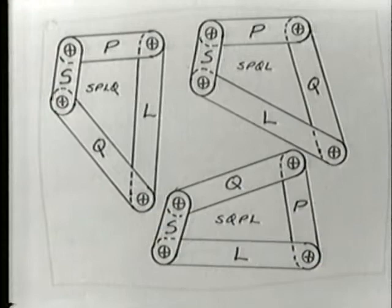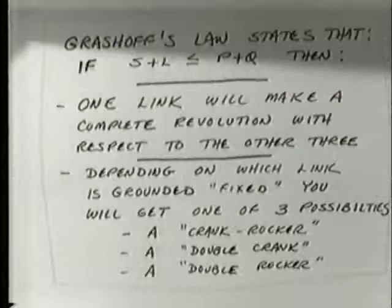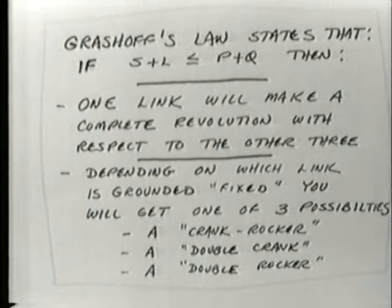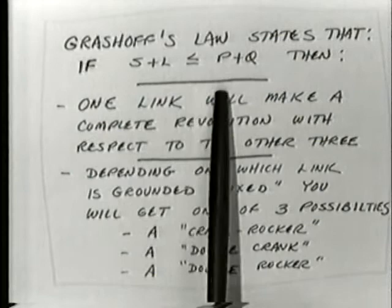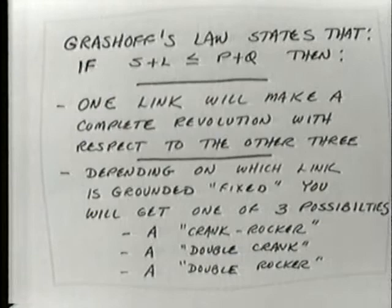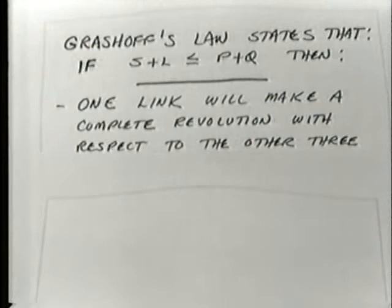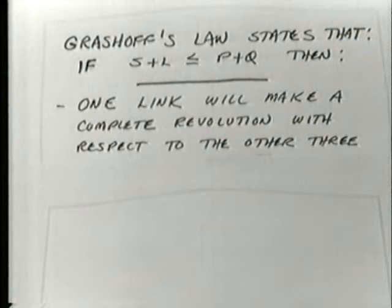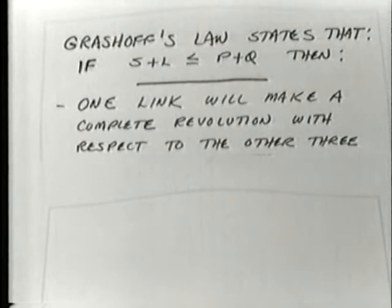I have cardboard models of those three arrangements. Grashoff's law states that the sum of the shortest and longest must be less than the sum of the other two links, and if true it is a Grashoff linkage — meaning at least one link will make a complete 360-degree revolution with respect to the others. If the Grashoff condition is not true, conversely, no link can make a full revolution.